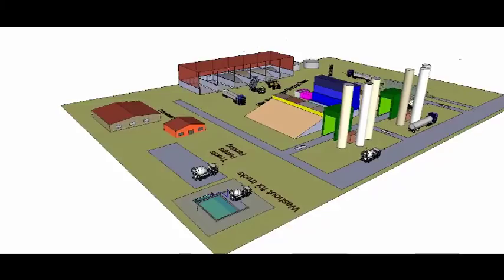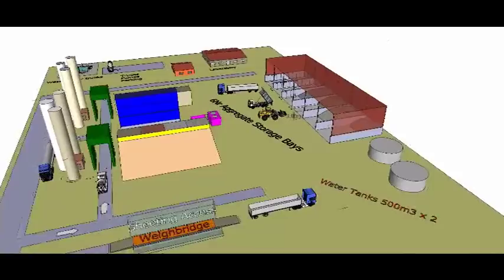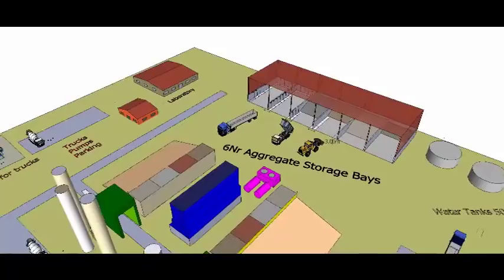Concrete Batching Plants Operation. The on-site concrete batching yard comprises two batching plants with mixers, silos, aggregate bins, conveyors, and control equipment, where the ingredients used to produce concrete are mixed before being transported to the work site.